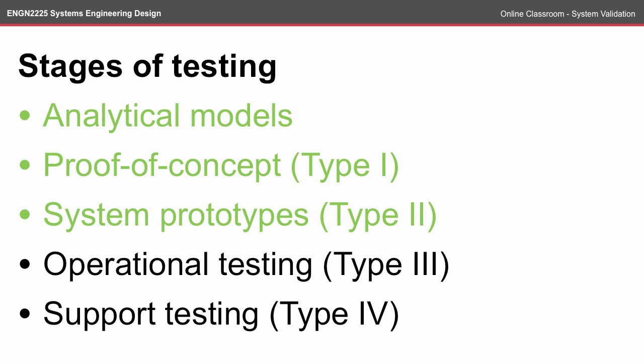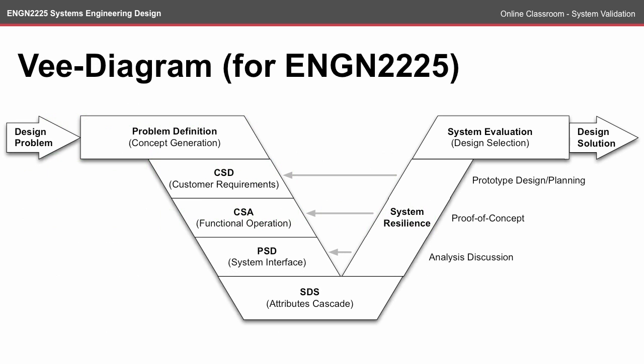At this stage of the course, we're really just interested in the first three: analytical models, proof of concept, and system prototypes. If we reconsider the V-diagram and make it specific for Engineering 2225, you could consider the system resilience topic as testing each of the different stages of the conceptual design. Once we have gone through the system resilience topic, we should have a design that is fairly robust and we can take that to the system evaluation or the design selection stage.